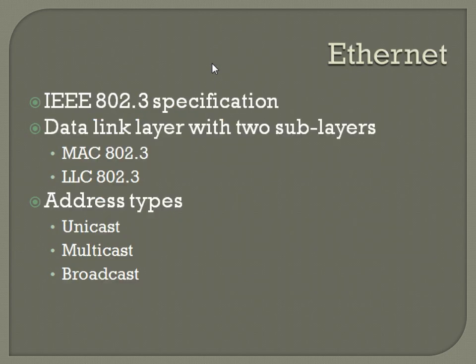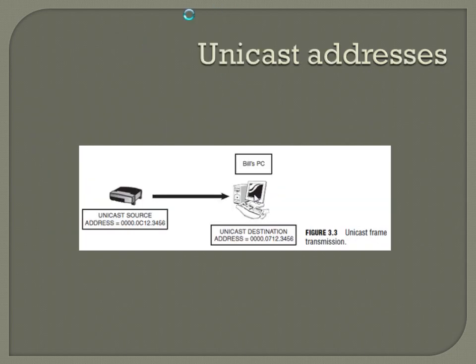Ethernet is the king of data link, for now at least and for the foreseeable future. IEEE 802.3 specification. It's actually got two sub-layers: the MAC layer — your MAC addresses that are hard-coded onto the NIC of every device — and then the LLC layer that handles some sequencing and other things. There are three different primary address types for Ethernet: unicast, multicast, and broadcast.